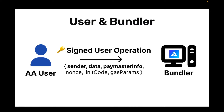First, let's talk about the relationship between the user and the bundler. An account abstraction user is going to sign something called a user operation. A user operation is like a meta transaction — an object that looks a bit like a transaction but has some additional fields. Familiar fields include: data (the call data the account will eventually send), nonce (for replay protection), initCode (to initialize the smart contract account if not already initialized), and gas parameters. Two things that are different from a regular transaction: the sender field specifies the smart account, and the paymaster info specifies who might be sponsoring the transaction.